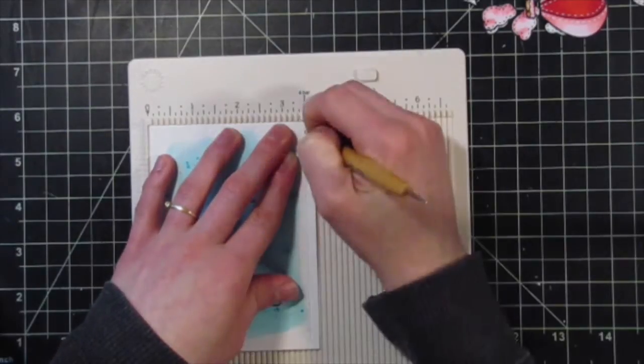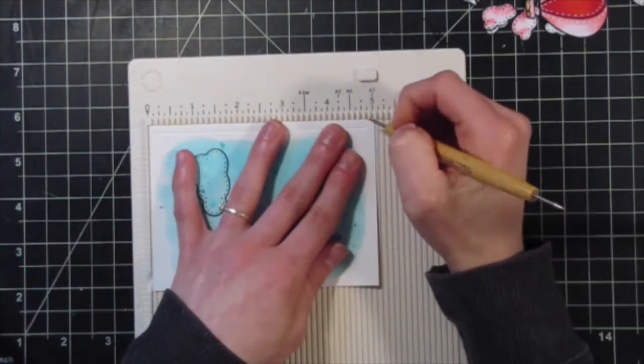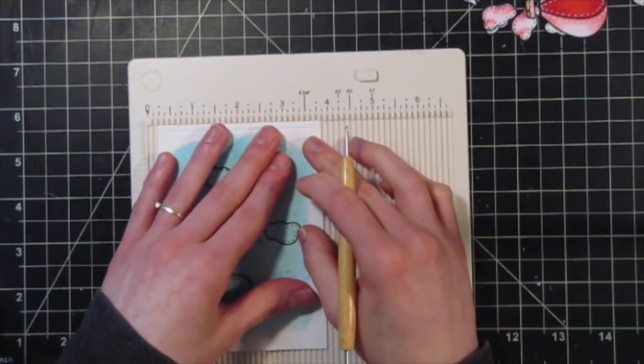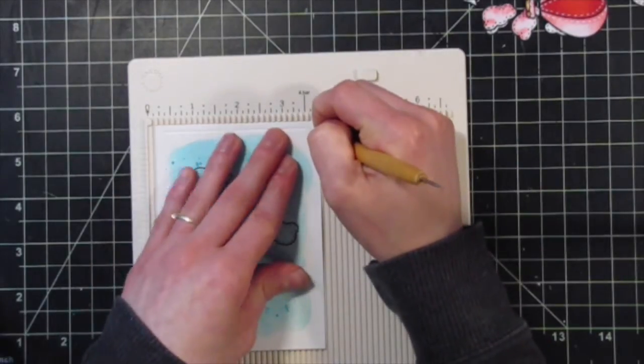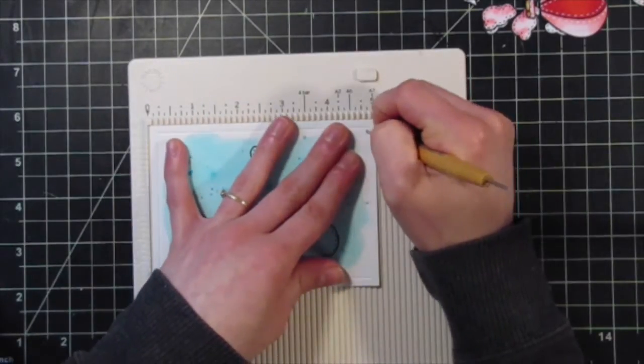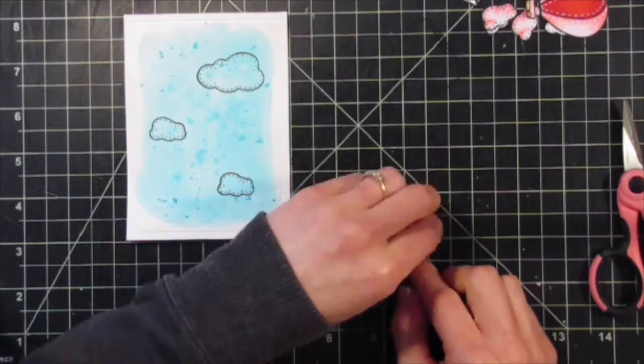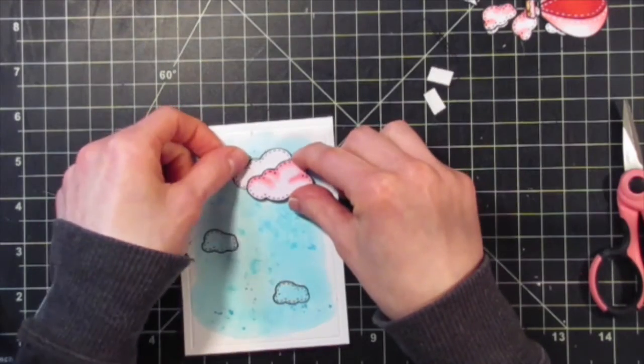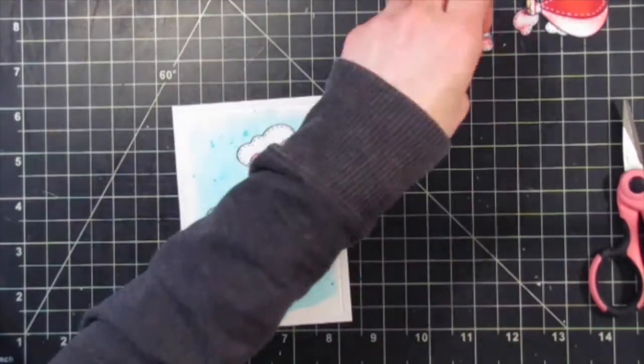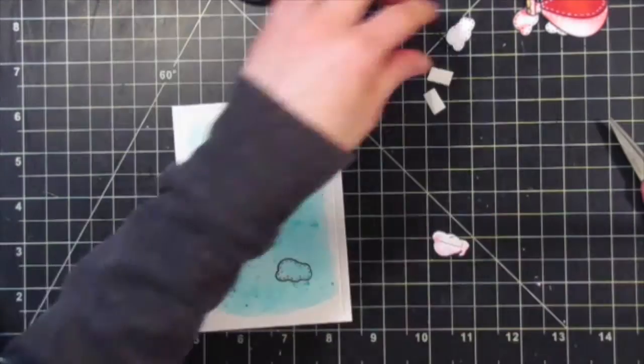Now I'm taking a scoring board and scoring a border around the edges of this paper to give it a more finished look. I always like doing this to my panels - it makes it really look nice and complete. Now I'm putting these clouds together, getting a placement as to where I would like them to go, and attaching them all to this background panel.